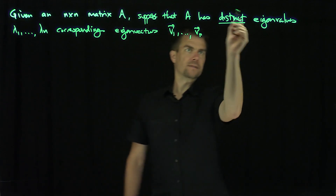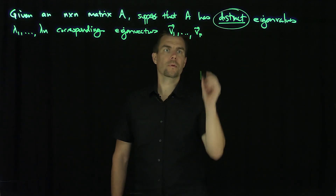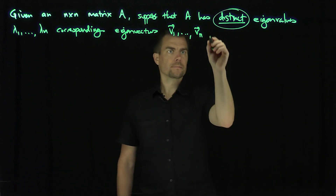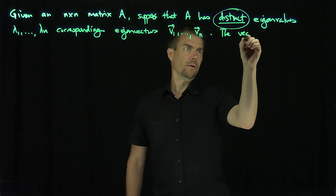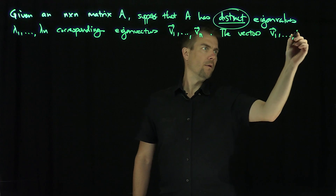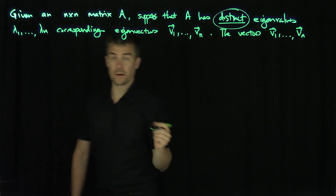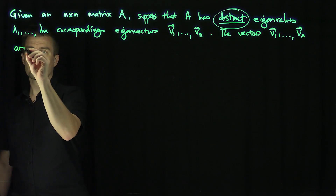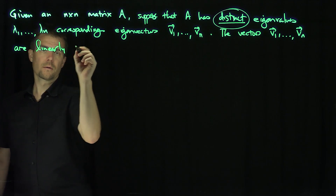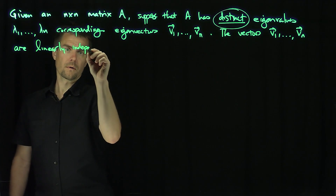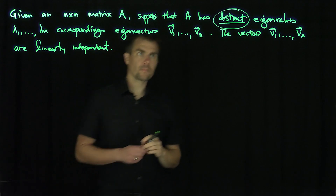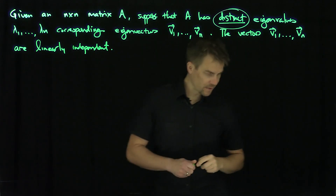And distinct is really important here. Then the vectors v1 through vn are linearly independent. So let's prove this statement.